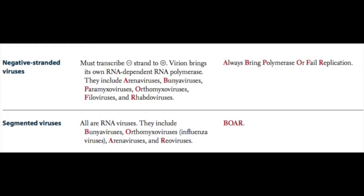The influenza virus actually consists of eight segments of negative-stranded RNA. These segments can undergo reassortment if two virions infect the same host cell. They can rearrange their genomes and cause what we call antigenic shift, which can lead to the worldwide pandemics that we see with the flu.